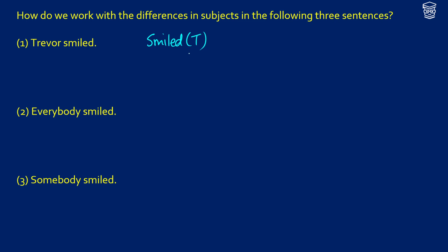But in the case of 'everybody smiled,' we don't get that. We get a predicate logic translation: for all X, smiled(X). So it's saying for everything in the universe, X, X smiled. And for the case of 'somebody smiled,' we would have: exists X such that smiled(X).